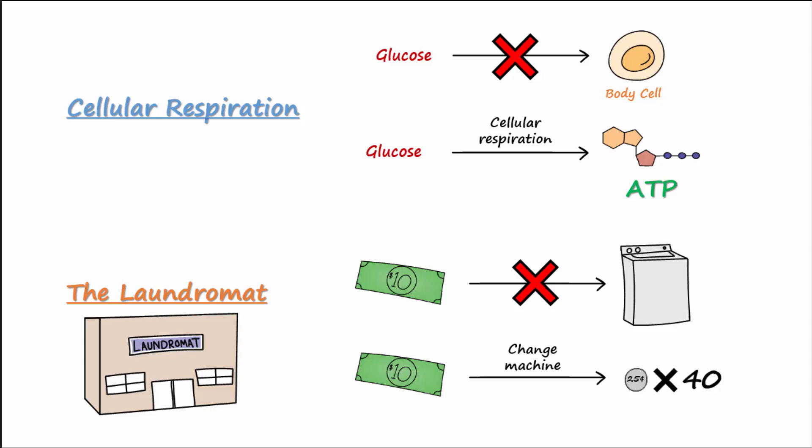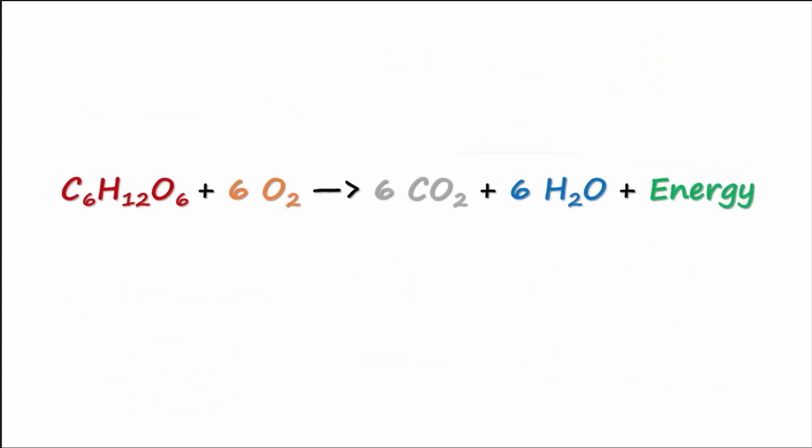For a ten dollar bill, how many quarters do you get? 40 is correct. For one glucose, cellular respiration will yield 38 ATP. The summary of cellular respiration reactions here shows that we need oxygen to make the energy that is ATP. This is why we must have oxygen to live. It is necessary in order to make sufficient ATP from glucose. Without oxygen, you would not be able to make sufficient amounts of ATP and you would die.